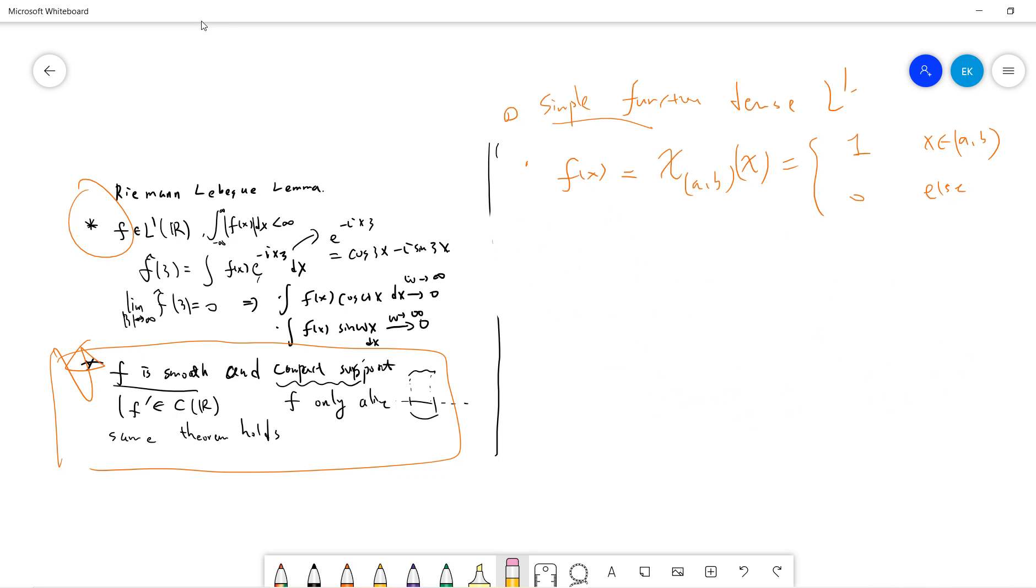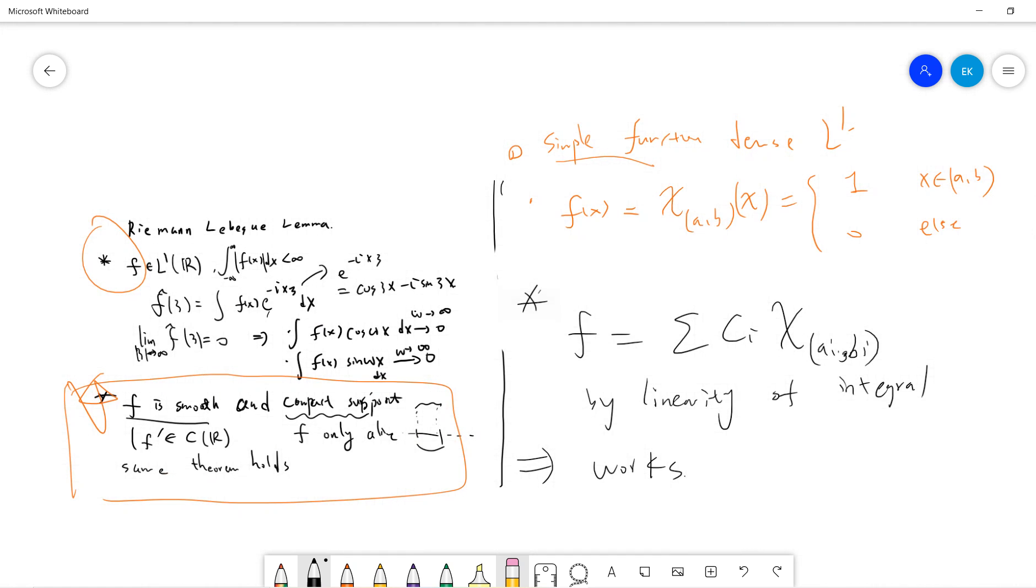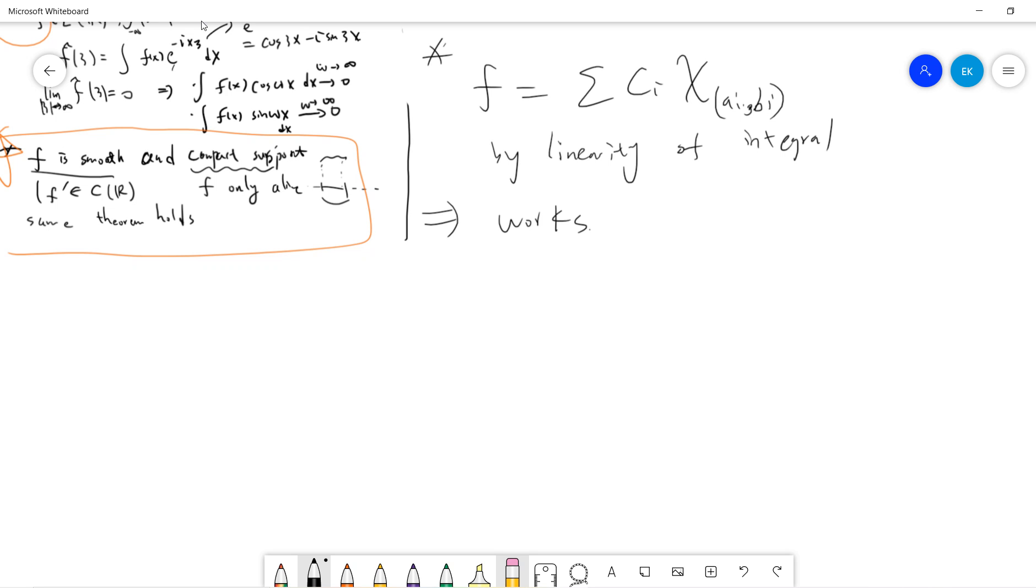Okay, so that means if f is written as sum of c_i chi_(a_i, b_i), then by the linearity of the integral, then it works. So the final step is trivial. So we know that the step functions are dense in L1.